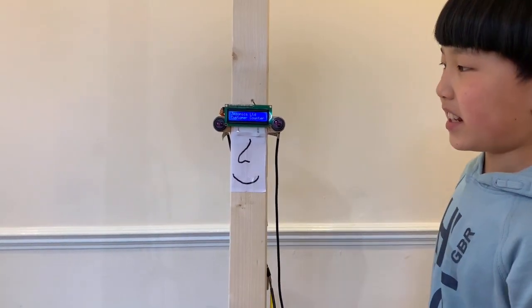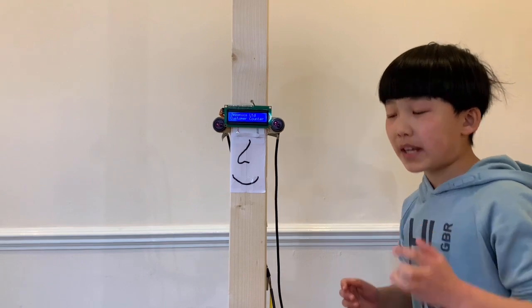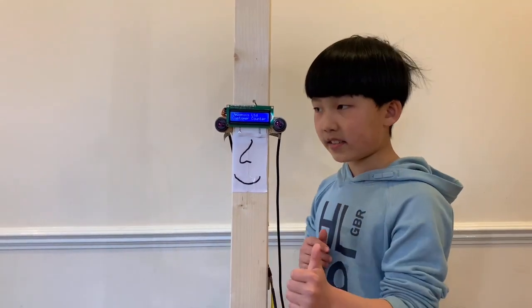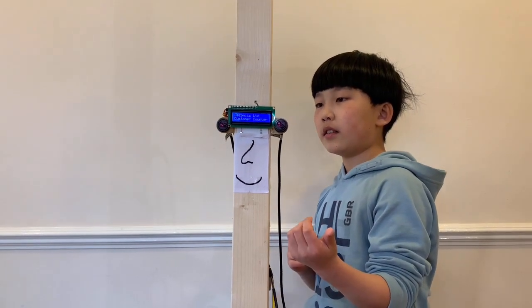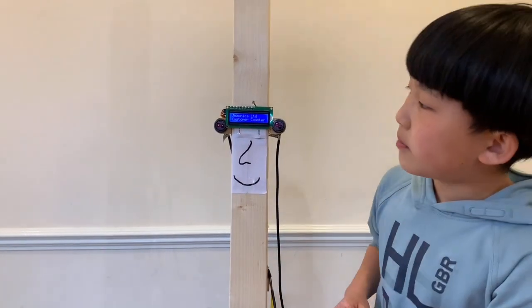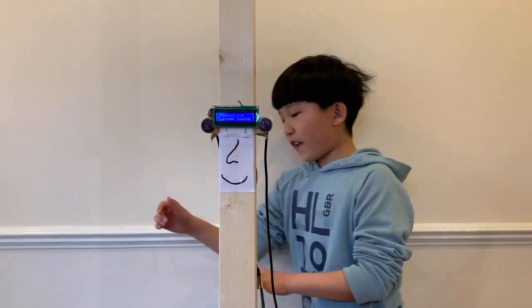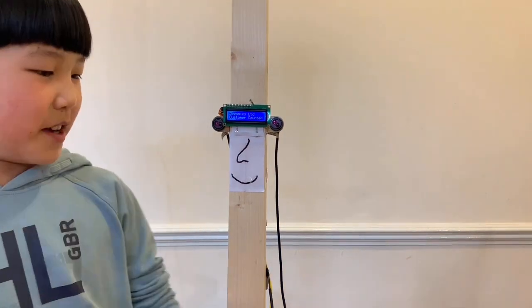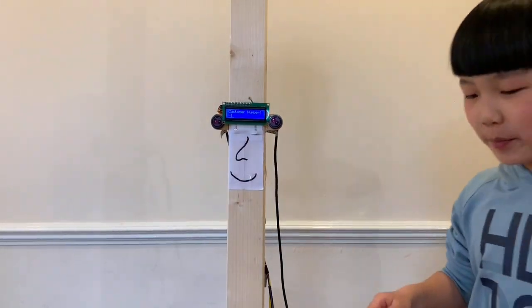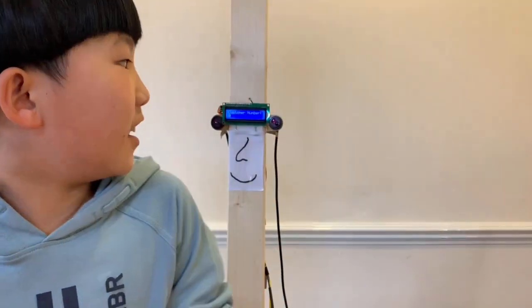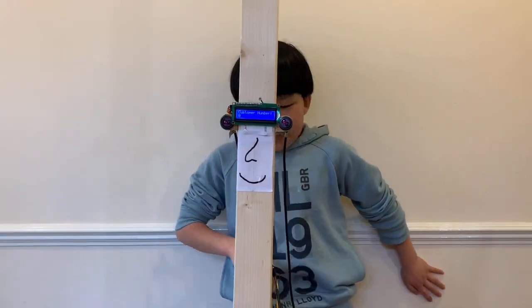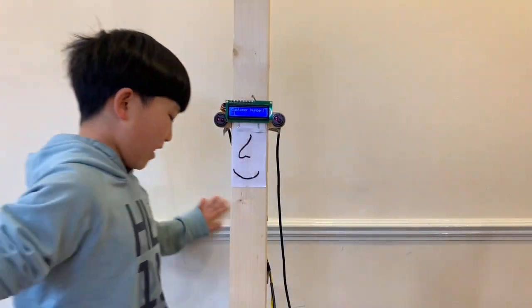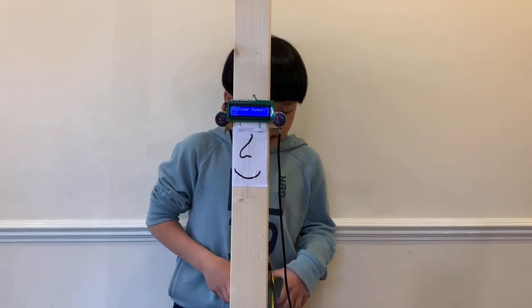Basically I can tell how many people go in and out. Right now I'm not so sure if this is in or this is out, but let's just try it anyway. If I first go this side, it's minus one which means a customer just went in. There's not much moving space but another customer just went in.